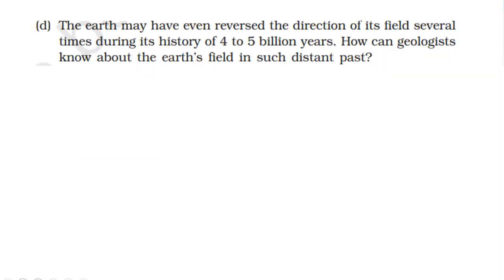Next question: The Earth may have even reversed the direction of its field several times during its history of four to five billion years. How can geologists know about the Earth's field in such distant past? Over four to five billion years, the magnetic field direction reversed.